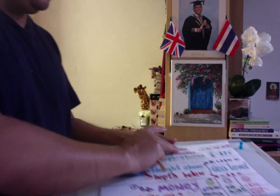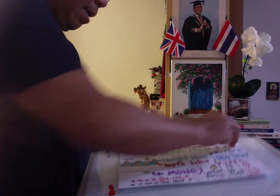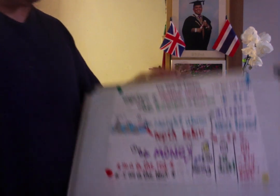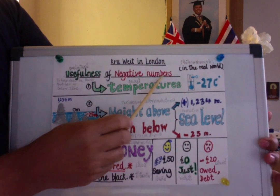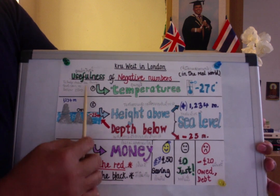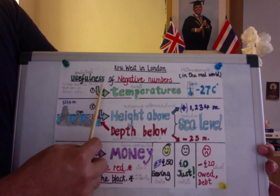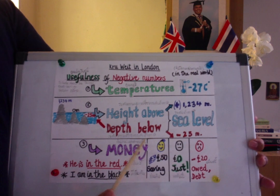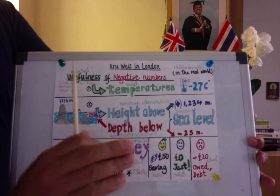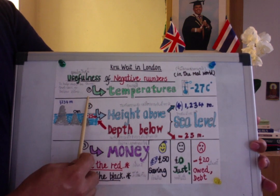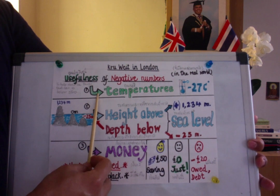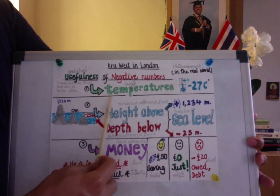The next slide is about the usefulness of negative numbers. We will find the use of negative integers in three main situations. When we talk about the usefulness of negative numbers, it is to help us describe things that can go below zero or less than zero. In the real world, we can find negative numbers in temperature.